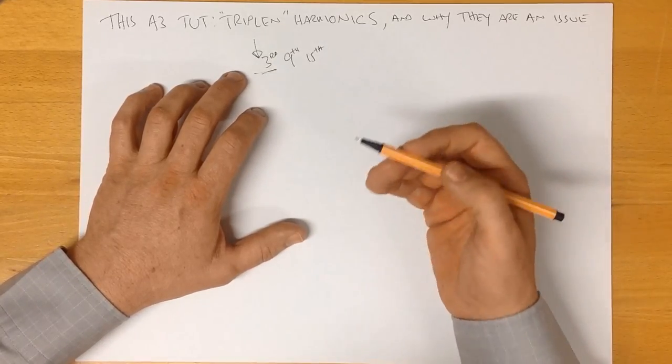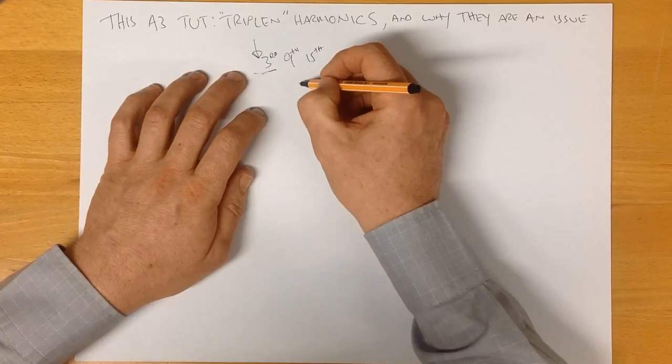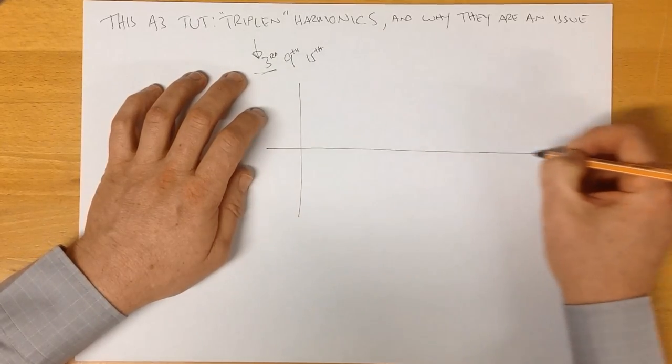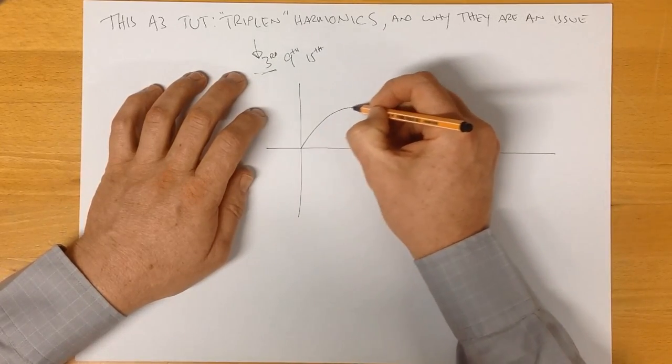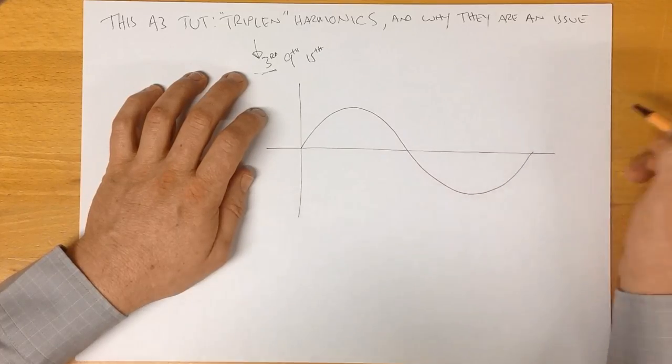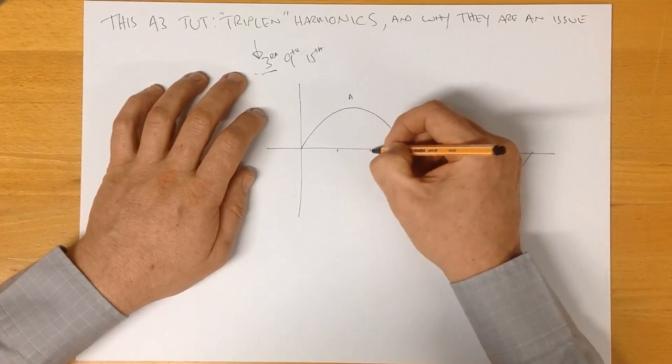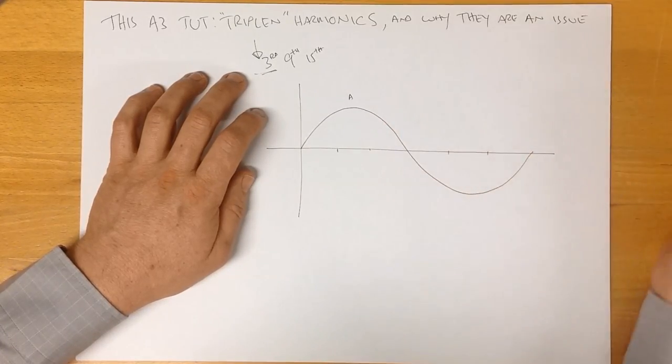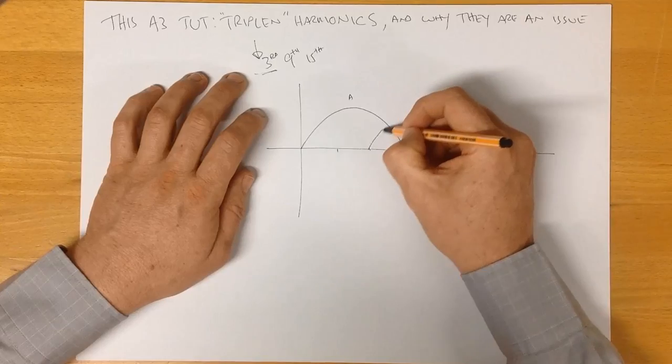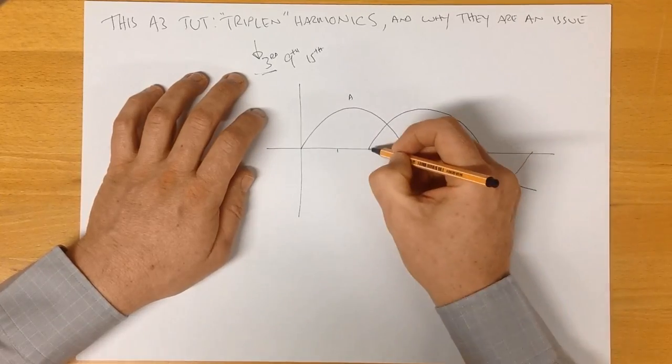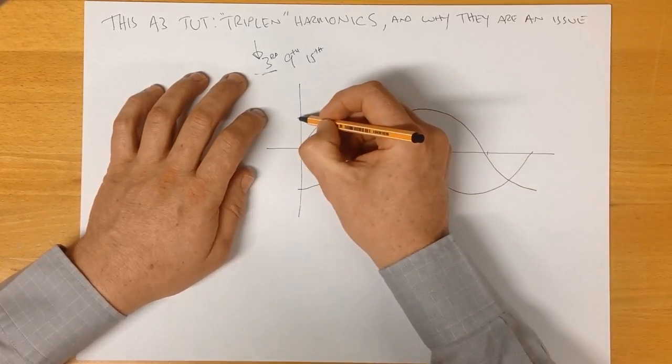If we look at a three-phase system in the time domain we have our first waveform here which we're going to call phase A like we've been doing. And we have phase B and phase C.